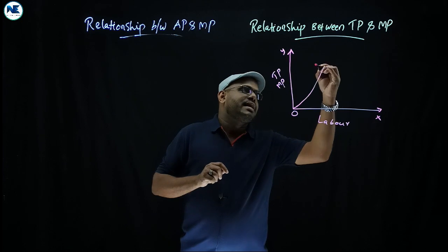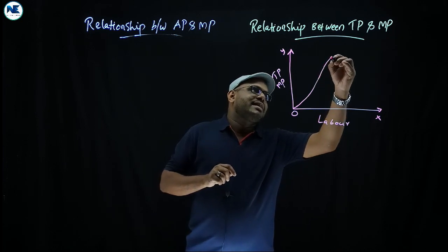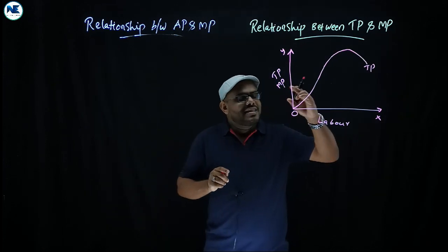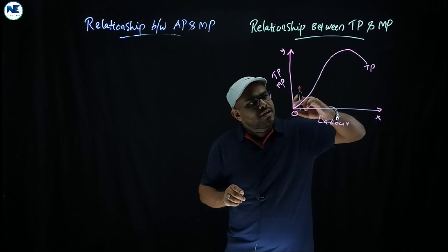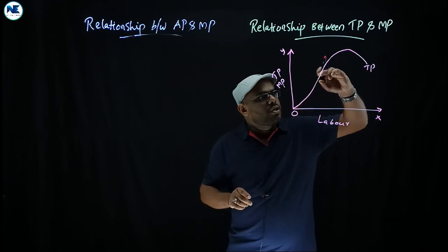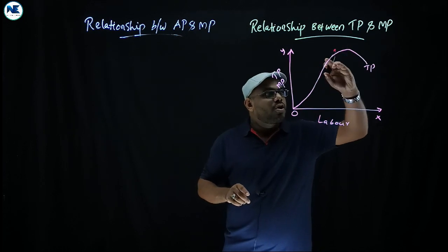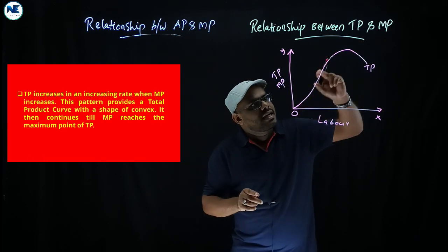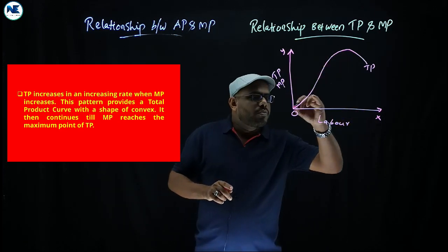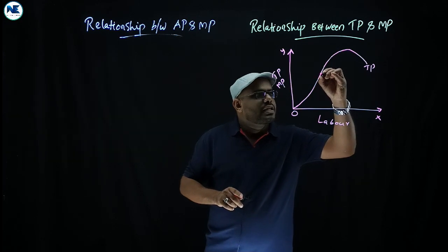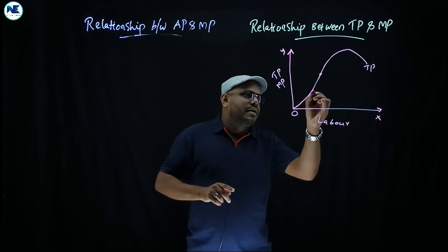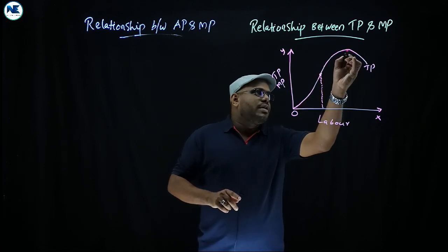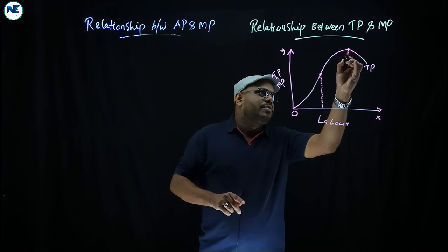The total product curve is increasing at an increasing rate, then increasing at a decreasing rate, then reaches a maximum, and after that total product declines. The shape of the total product curve is first convex to the origin, then concave, reaching maximum and then declining. We mark the point of maximum on the total product curve.